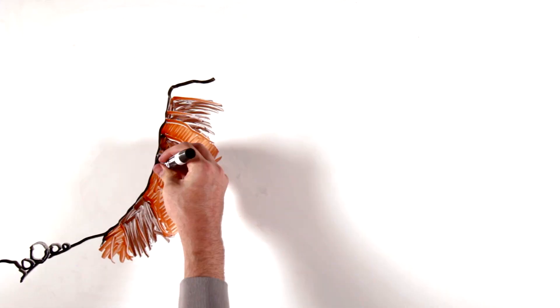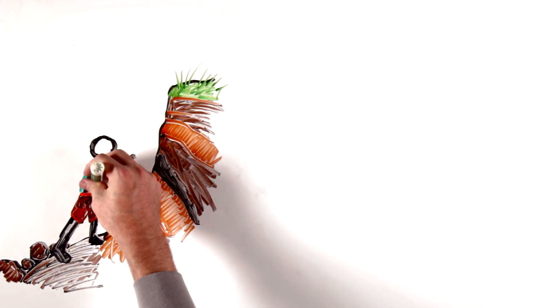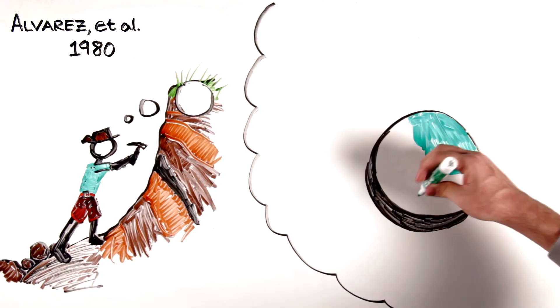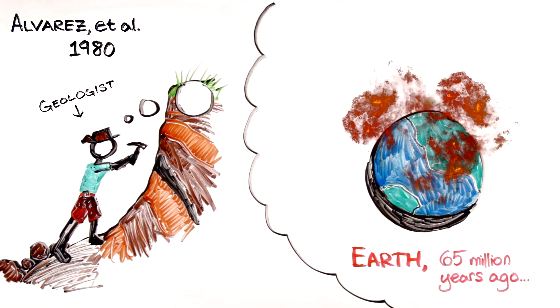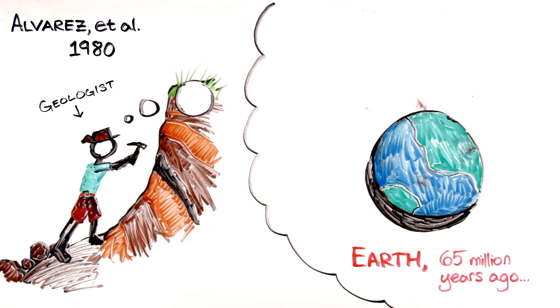In the late 20th century, interests and technology aligned to make asteroids a hot topic. In the early 1980s, scientists proposed that an asteroid wiped out the dinosaurs. So it seemed like a good idea to look for other asteroids out there to see if they could be a threat to humans.